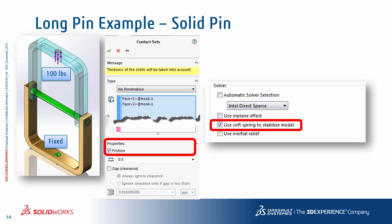The other alternative is to use soft springs in the study properties. But keep in mind the soft spring option should only be used to stabilize unconstrained or insufficiently constrained components, especially if you don't care about what happens in those unconstrained directions. So both of these options, though they seem viable, can actually end up producing unrealistic behavior.